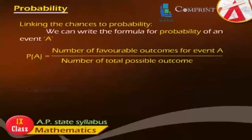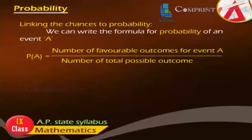Linking the chances to probability: We can write the formula for probability of an event A as P(A) = number of favorable outcomes for event A divided by the number of total possible outcomes.